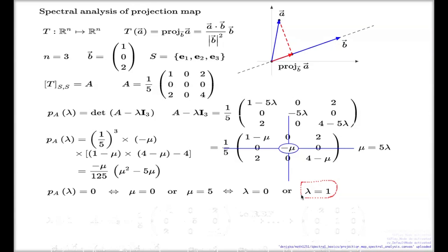Now for each of these eigenvalues, I'm going to do the spectrum. I'm going to identify the associated eigenvectors. I'll start with the value λ=1 first, which in terms of μ is the value 5.